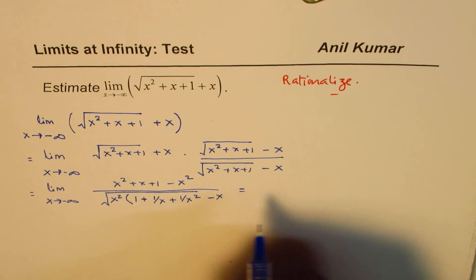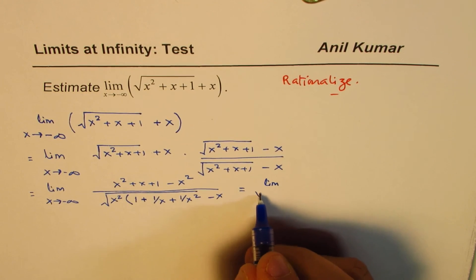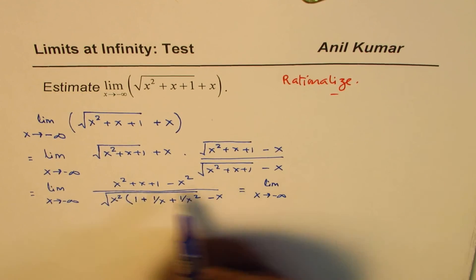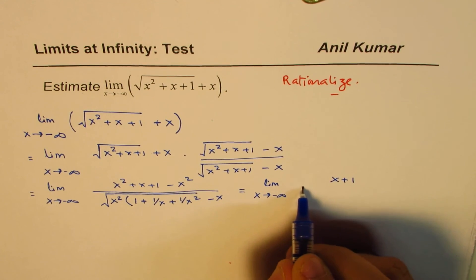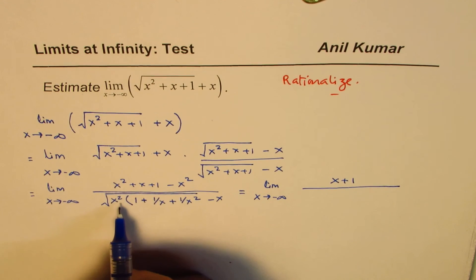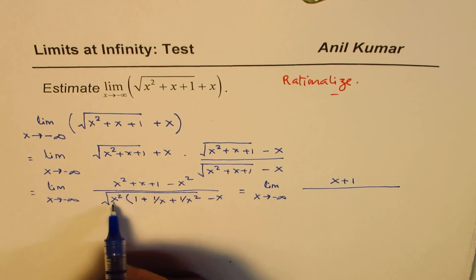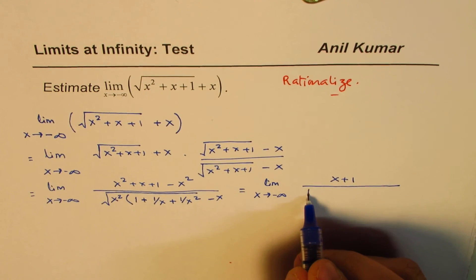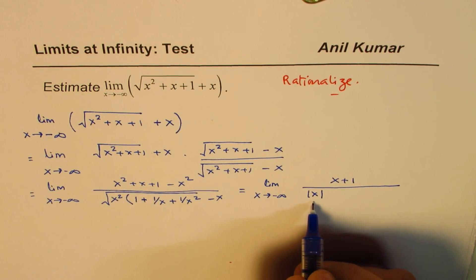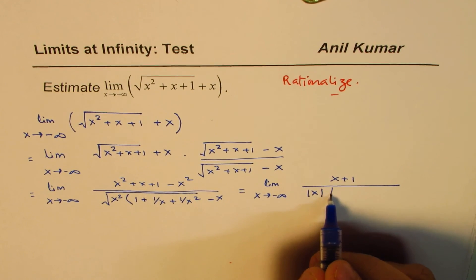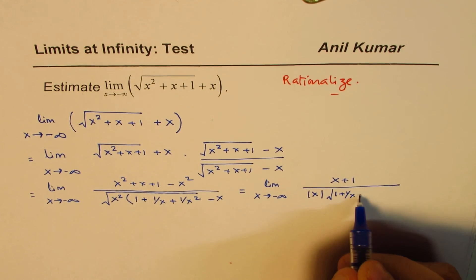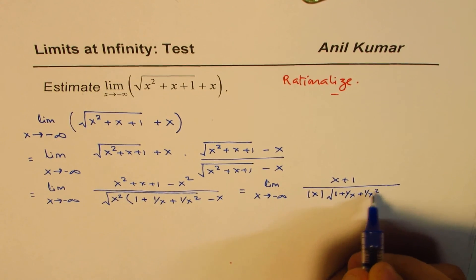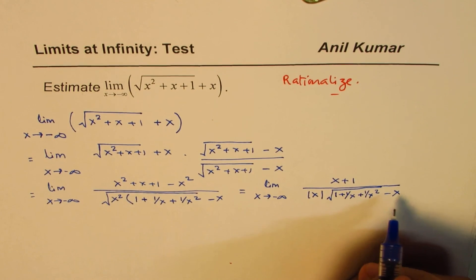Going one more step further, we simplify: x squared minus x squared is 0, so we're left with x plus 1 in the numerator. In the denominator, within the square root we have x squared — and the square root of x squared is the absolute value of x, not just x. Remember this, as it's a common mistake. Within the square root we are left with 1 plus 1 over x plus 1 over x squared, minus x.